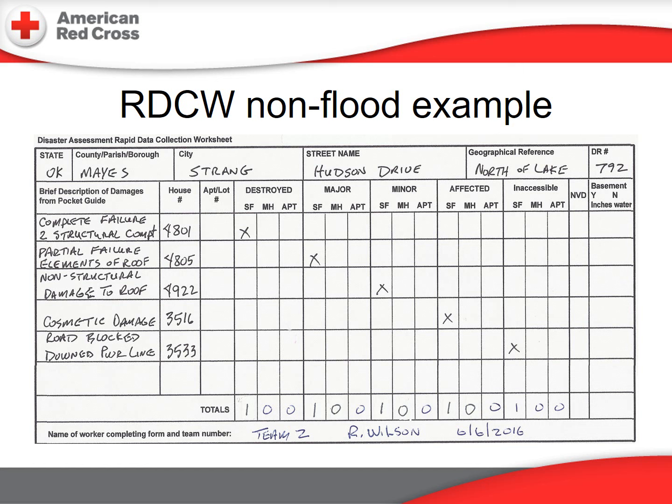Write a shortened version of the pocket guide description in the description box next to the house number. To the right, place an X in the appropriate column aligned with the dwelling type — single family, manufactured home, or apartment. Be sure to bring down the total counts for each column at the end of the sheet. The sheet should also include your team number, name, and date at the bottom of the form.